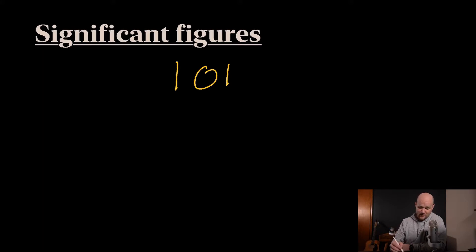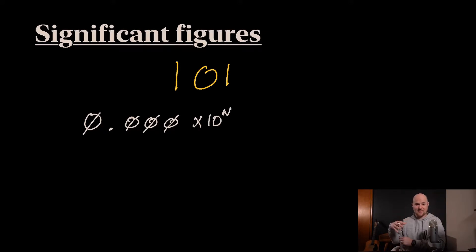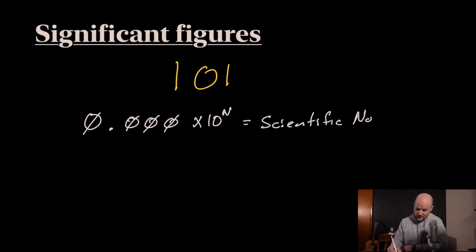The proper way to write numbers in scientific notation is to have some number with a decimal point and however many digits are needed after it, times 10 to the n, where n represents how big or small the number is. That is how you write scientific notation.